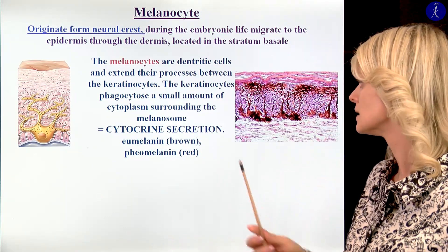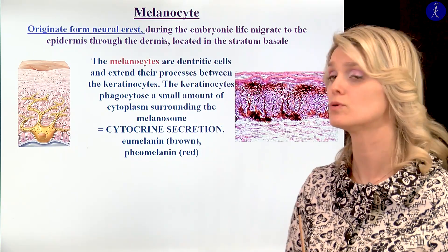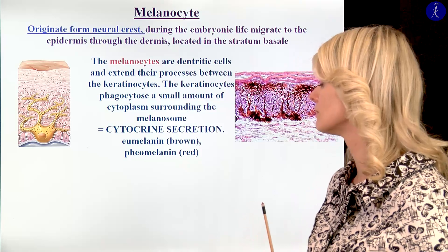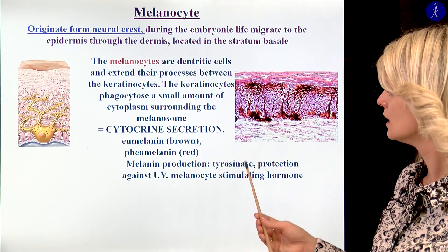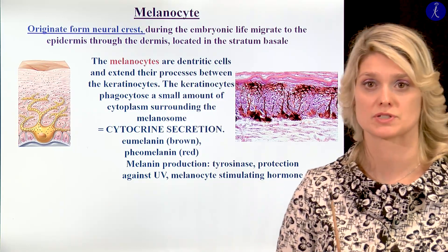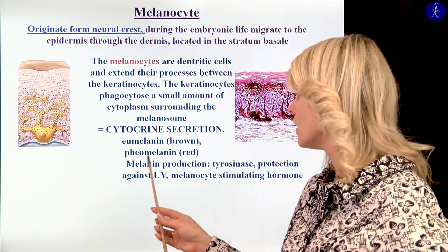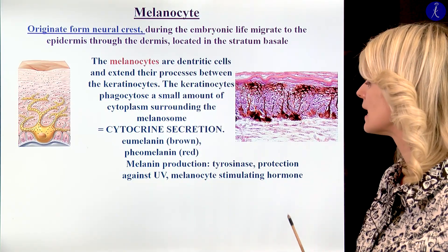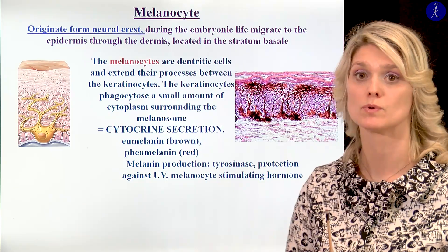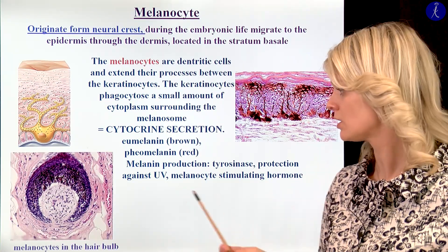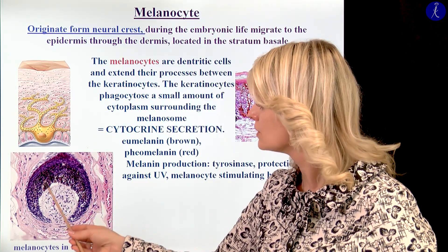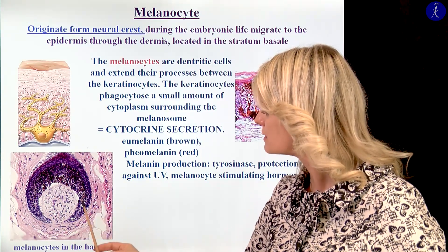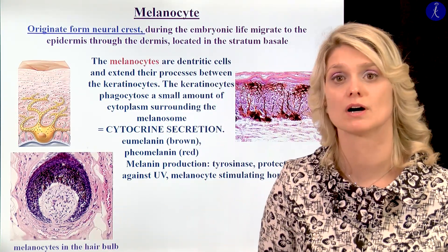We can talk about brown pigment called eumelanin, and we can talk about red pigment called phaeomelanin. During the melanin production, we can activate it because of the UV light, and we have a lot of stimulating hormones. We have melanocytes — for example, you saw it in the hairy skin slide. Melanocytes are in the hair bulb to form the color of our hair, and we can find them in the skin too.